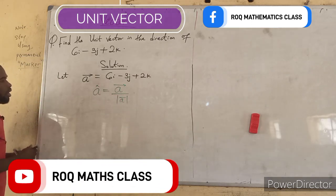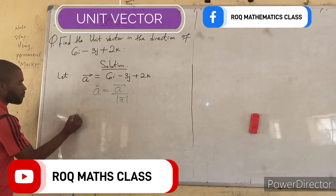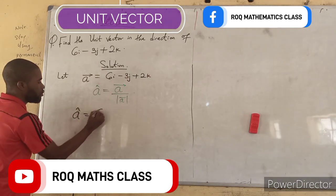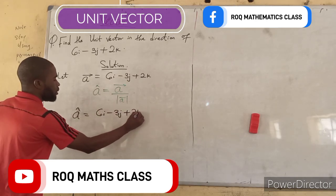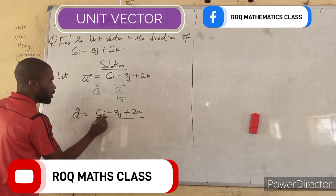So, our unit vector a will now be vector a which is 6i minus 3j plus 2k divided by modulus of vector a.